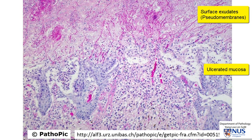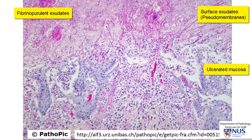You can see the mucosa is ulcerated and there is some associated acute inflammation with fibrin — hence fibrinopurulent exudates. And the residual mucosa shows some reactive changes.